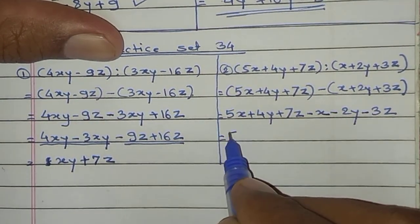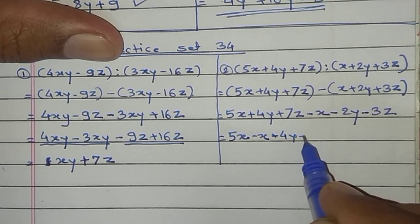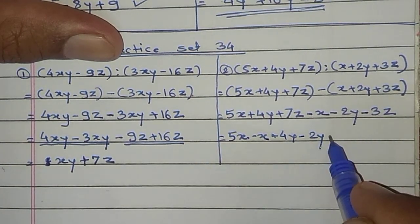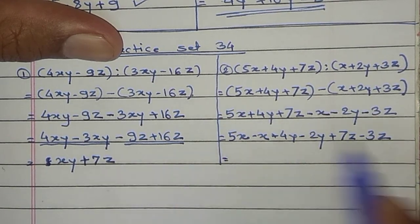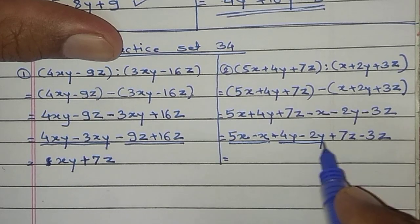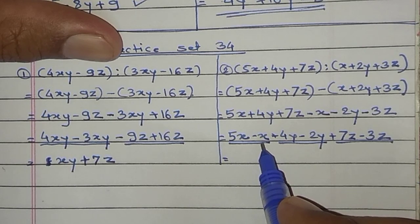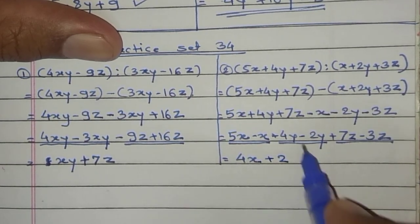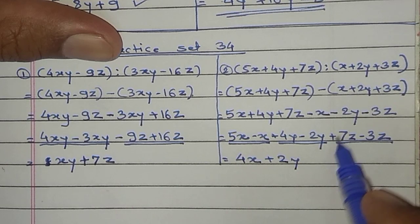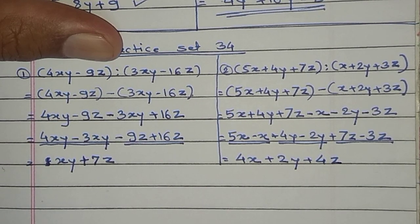Write the like terms together: 5x minus x, plus 4y minus 2y, plus 7z minus 3z. Now write the answers. 5x minus x means 5x minus 1x, answer is 4x. Plus 4 minus 2, answer is plus 2y. Plus 7 minus 3, answer is plus 4z. This is our final answer.